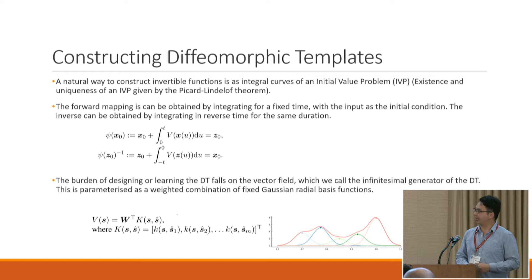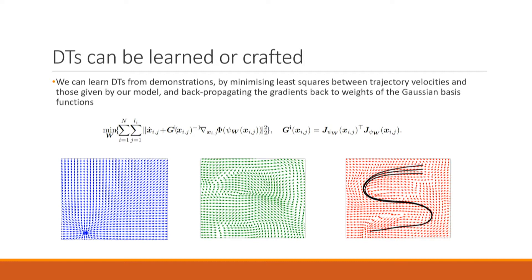In the next few slides, I'll show how we can learn or craft some of these diffeomorphic templates. To learn them from demonstrations, we formulate a least squares problem between trajectory velocities and those given by our model, and backpropagate gradients all the way to the weights of the Gaussian basis functions. The green vector field shown is an example of a learned infinitesimal generator of a diffeomorphic template that morphs the blue vector field into the red.